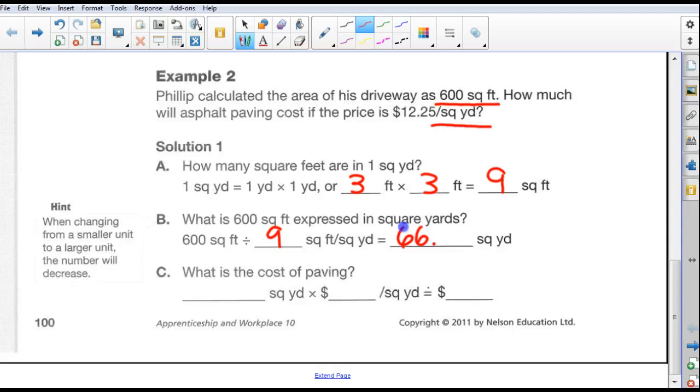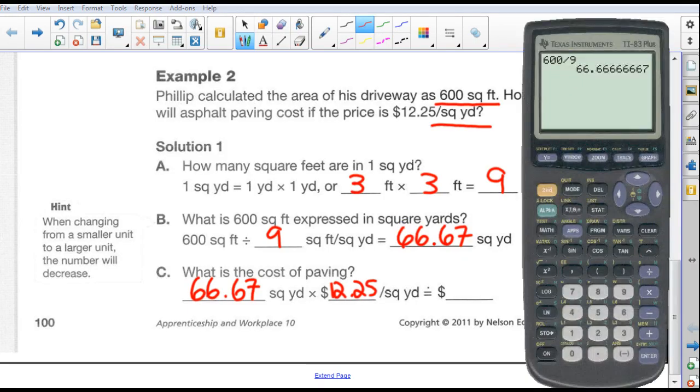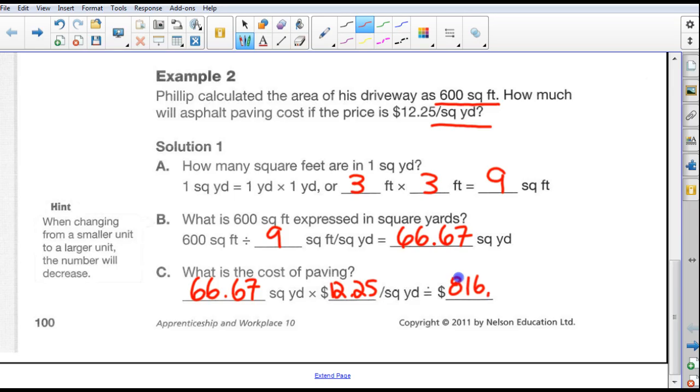Okay, so 66 point, let's just round it to 67 square yards. What is the cost of paving? Well, the cost of paving is $12.25. Oh, that's actually, they're asking for the actual square yards. We have 66.67 square yards at $12.25 per square yard. So we just punch in those numbers, 66.67 square yards. Multiply that by $12.25, which means it's going to cost $816.71 to pave that particular drive.